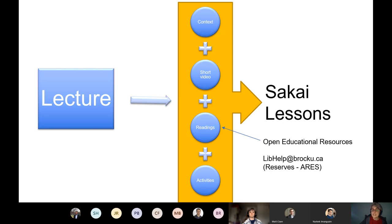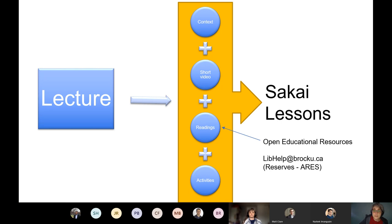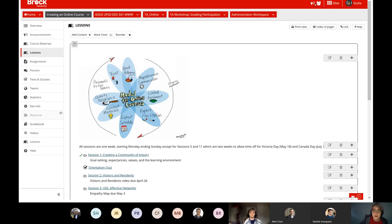We recommend using Sakai Lessons because it lays things out in a really nice, structured way. There are opportunities to use OER — open educational resources — and anything you used to scan as a document: if you want copyright clearance or a chapter from a book, please contact the library and they can put it into Aries for you. The library is a great partner for all copyright needs.